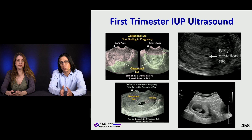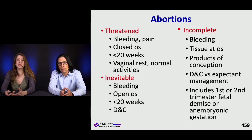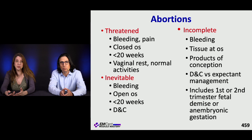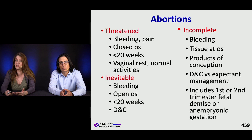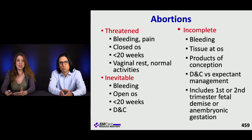A definitive IUP is what can exclude an ectopic. Now let's talk about miscarriages. You can have a threatened abortion or an inevitable or incomplete abortion. The difference between threatened and inevitable is really whether the os is open or closed — both can have bleeding. Threatened can have pain, and this would be less than 20 weeks. With a threatened abortion, recommend vaginal rest; normal activities are okay. With an inevitable abortion, when the os is opened, there's not much you can do.